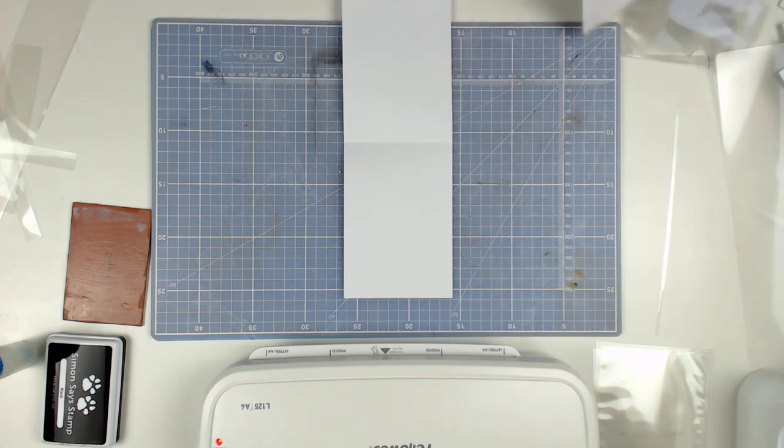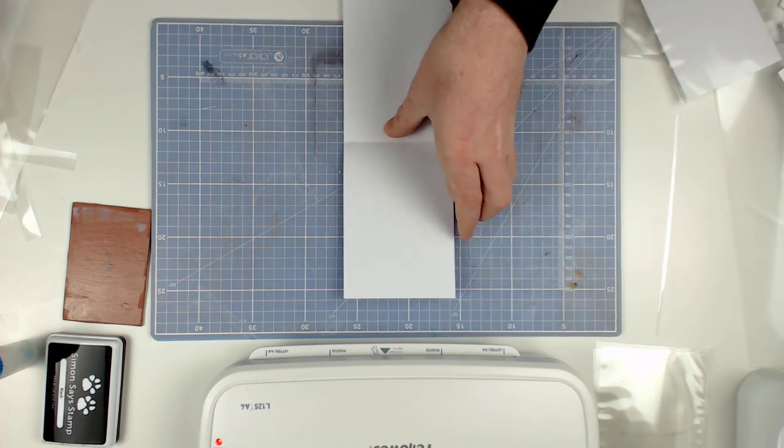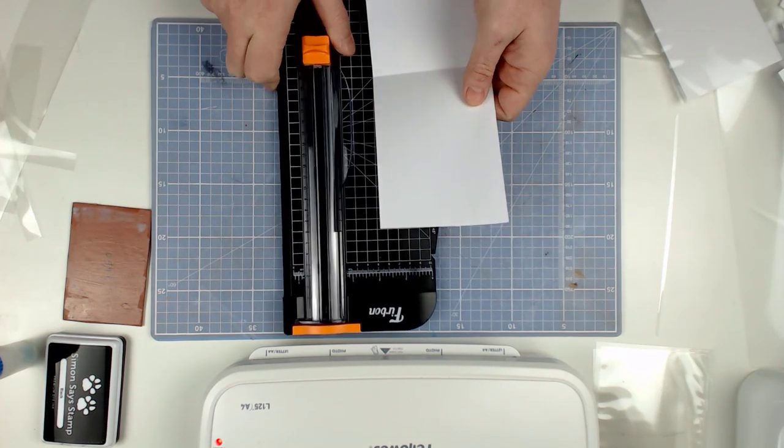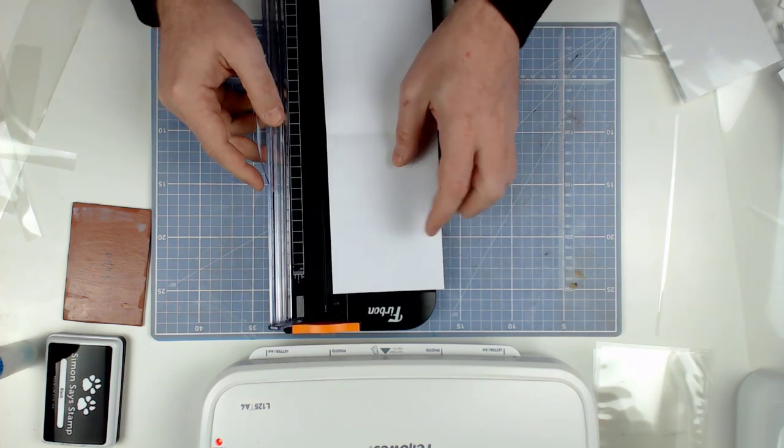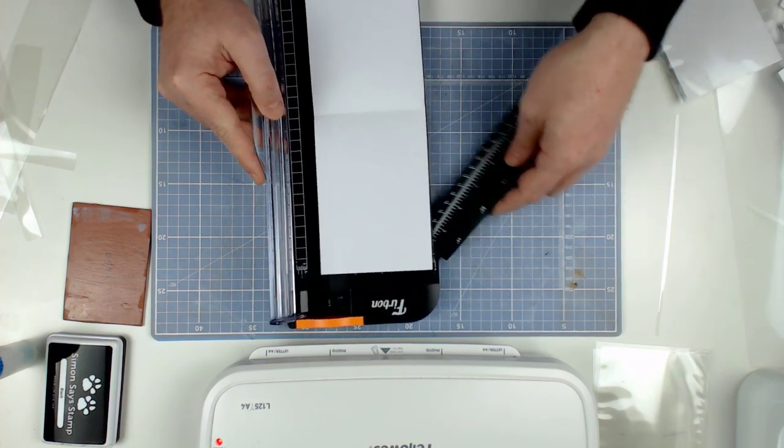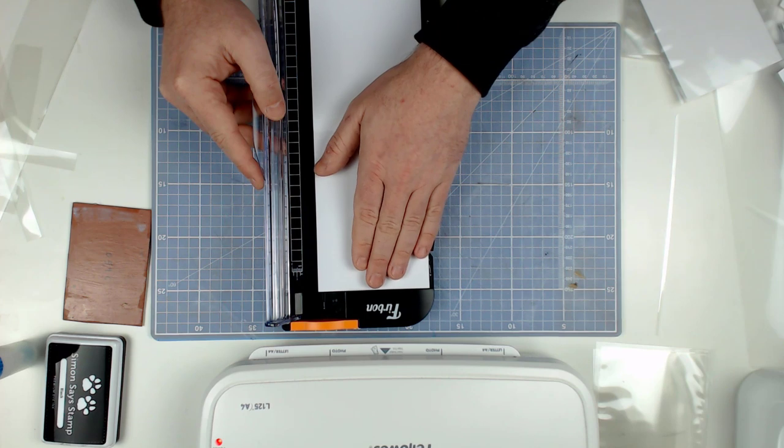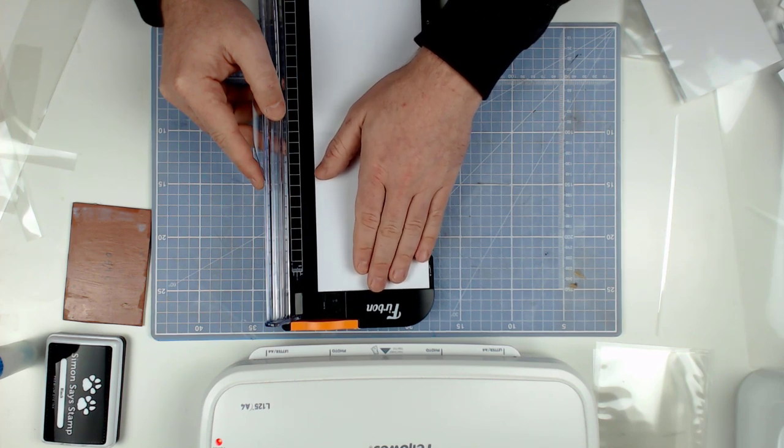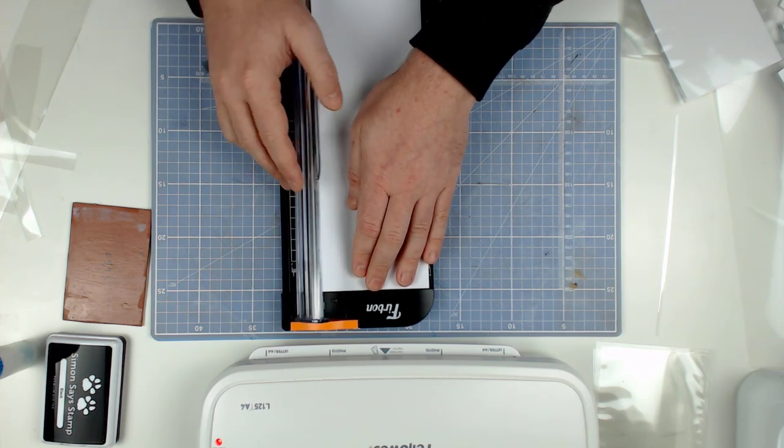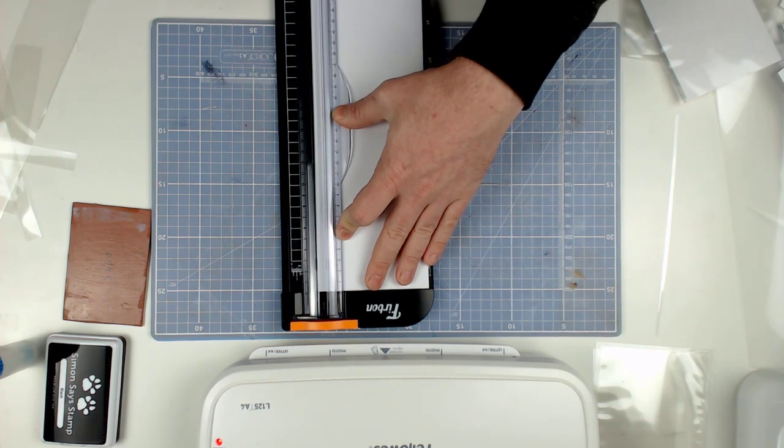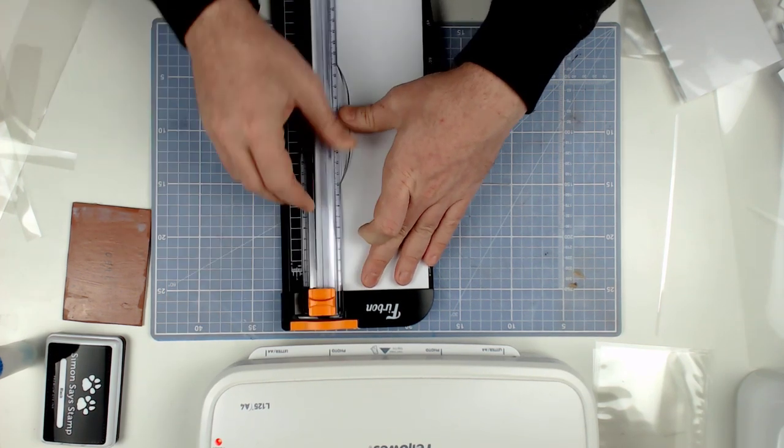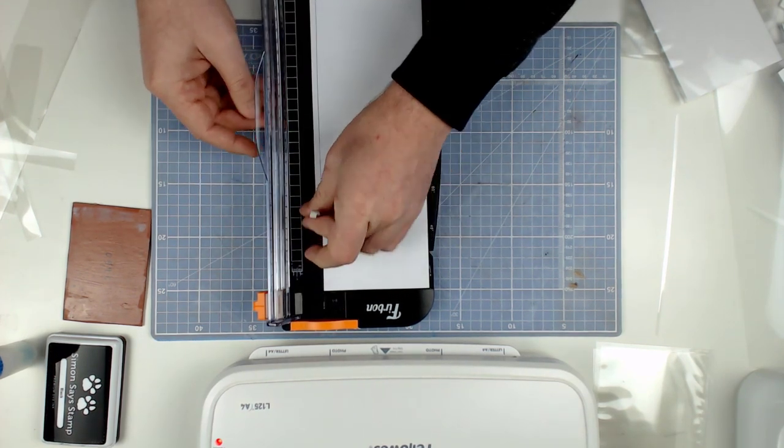Then I unfolded it and trimmed off around about a centimeter from the open edge—not the folded edge. I am basically just making sure that it will fit in the pouch. So I am remembering those measurements I had earlier, which is around ten and a half and fourteen.